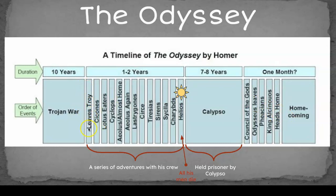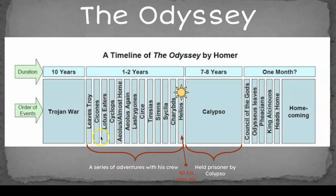For the first one or two years after he leaves Troy, he goes on a series of adventures with his crew. They encounter a whole bunch of monsters and witches and different things — the Cyclops, the Lotus Eaters, Circe, the Sirens, Scylla and Charybdis. And when they reach the cattle of the Sun God, all of his men die.